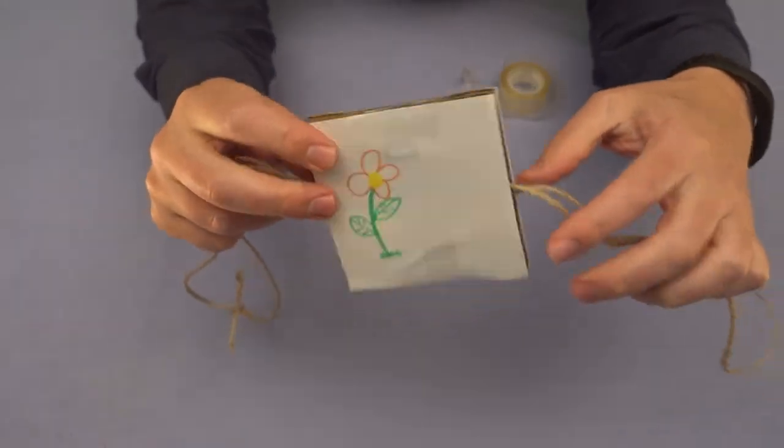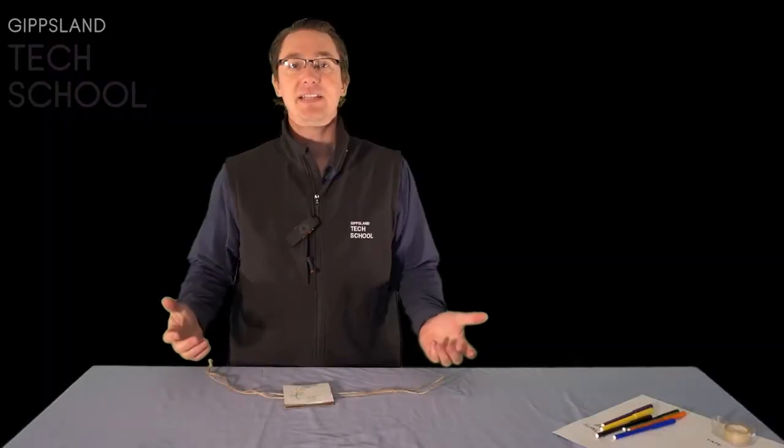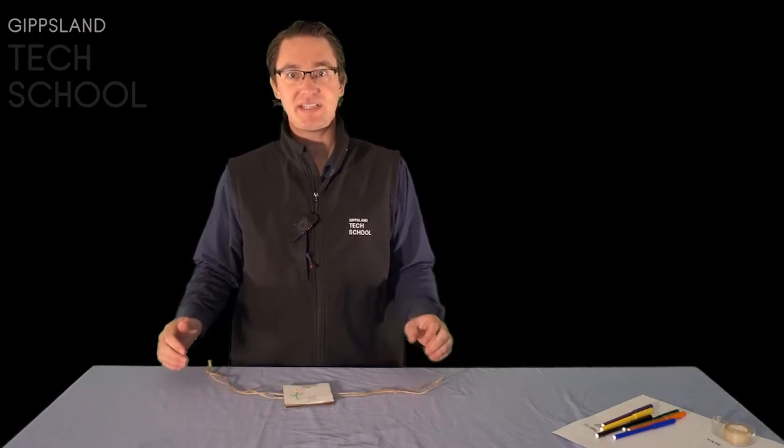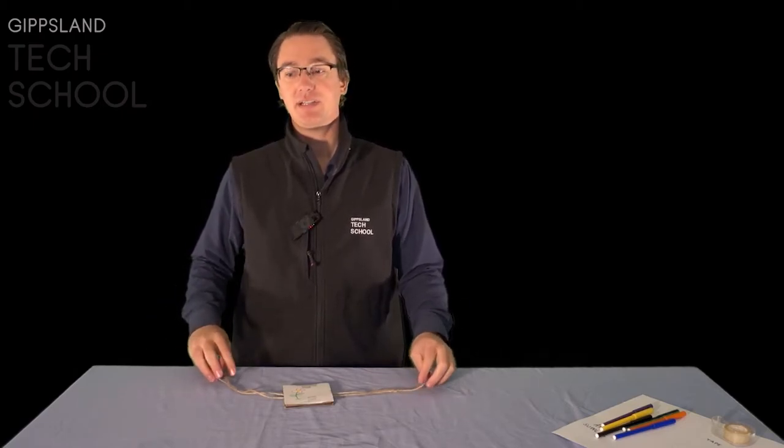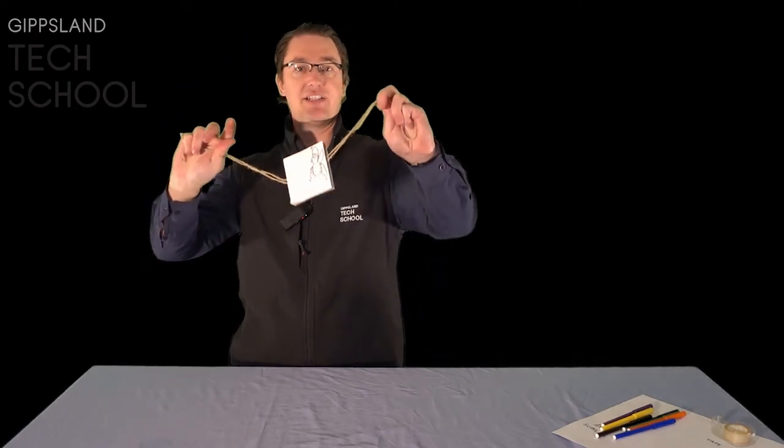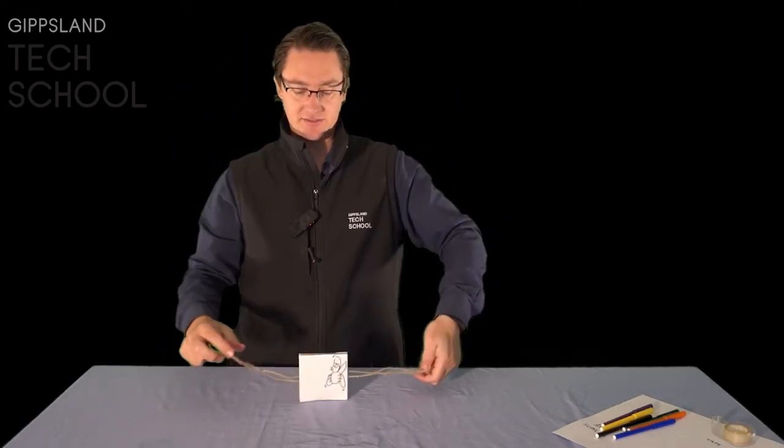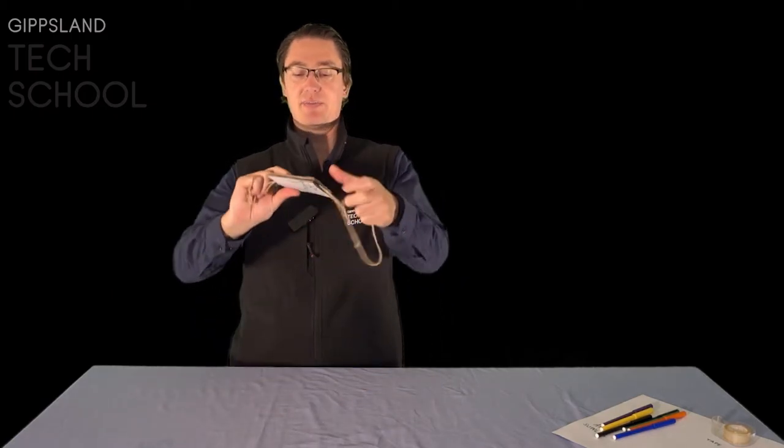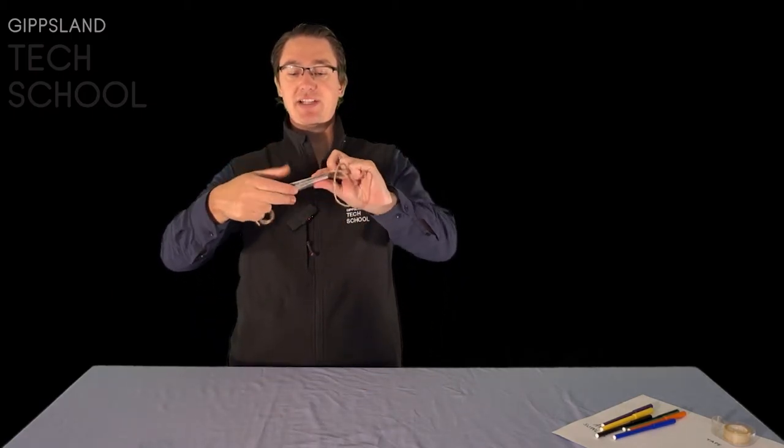Now we have everything we need to create this effect. To see the effect in action we now need to twist up our string. The trick to doing this is to hold the end of the string in your little finger on each hand, then use the rest of your hand to twist around the picture. Twisting up the string as much as you can.